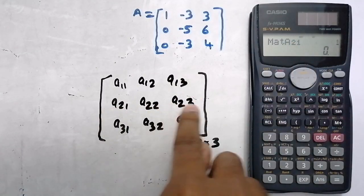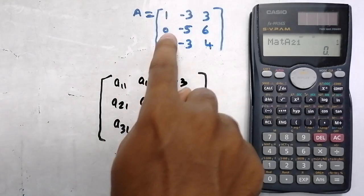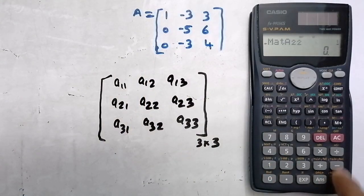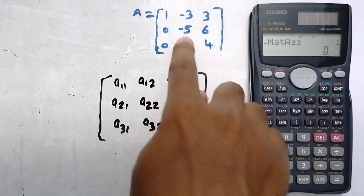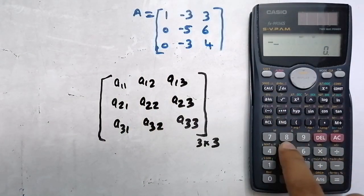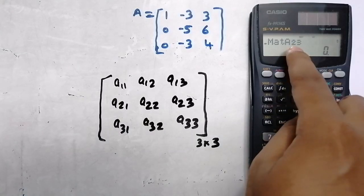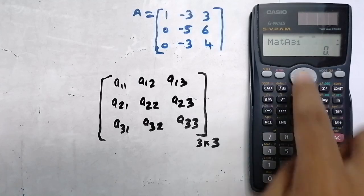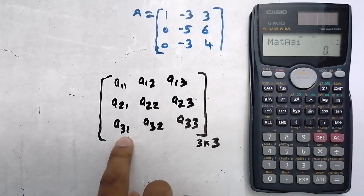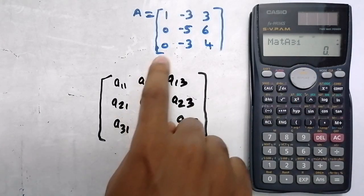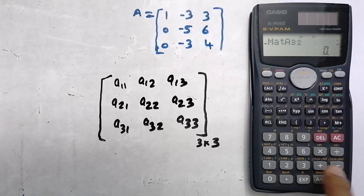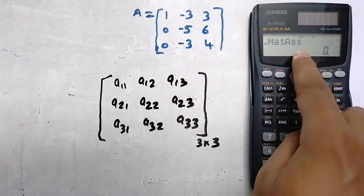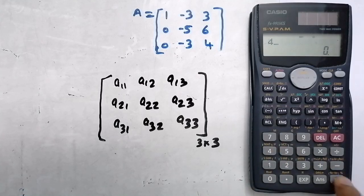Then A21, the second row first element, is 0. Then A22, the second element, is minus 5. Then A23, the second row third element, is 6. Then A31, the third row first element, is 0. Press Equal. Then A32 is minus 3. Press Equal. Then A33 is 4. So now I have stored all the values of the matrix.